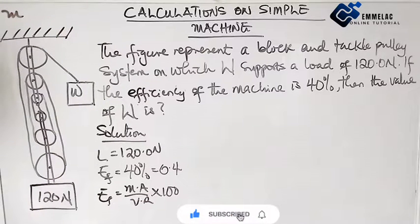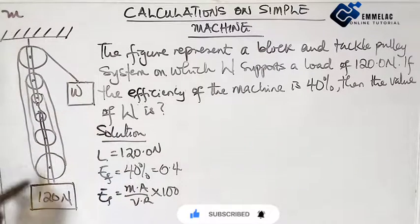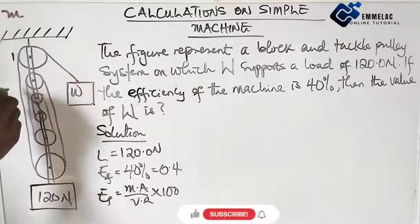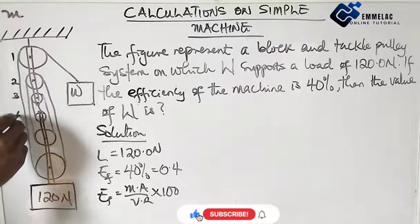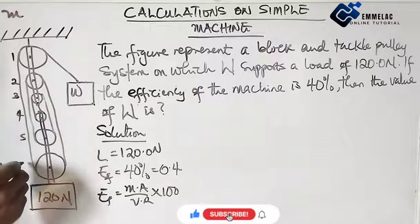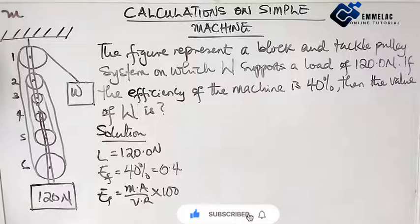The velocity ratio here, since this pulley is actually fixed, so the velocity ratio here is the number of pulleys. Here we have 1, 2, 3, 4, 5, 6. So the velocity ratio here is 6.